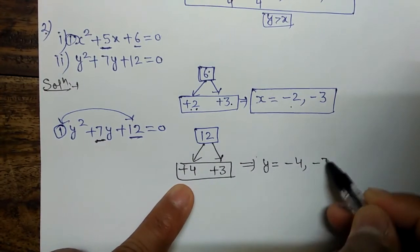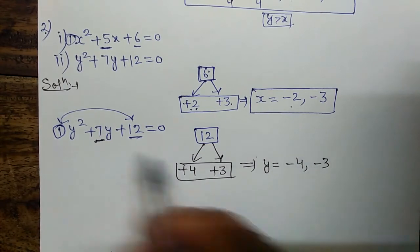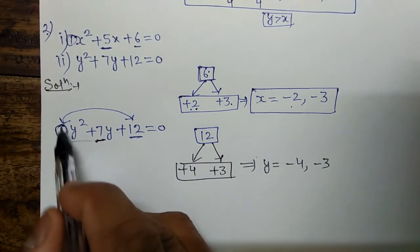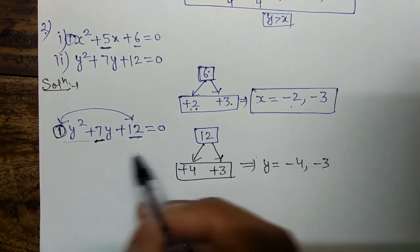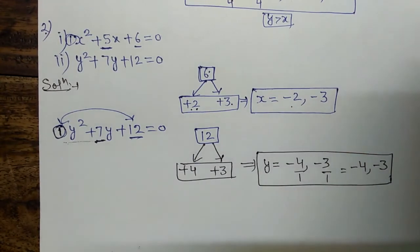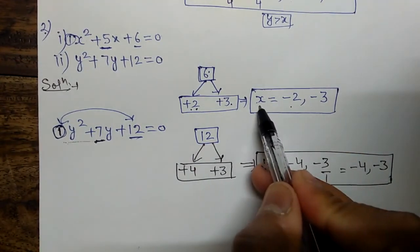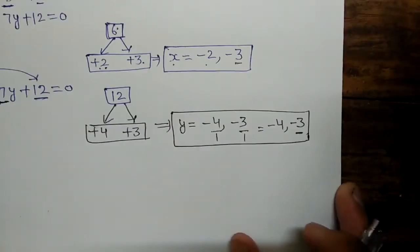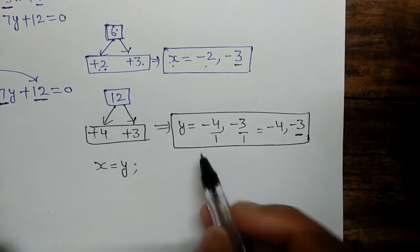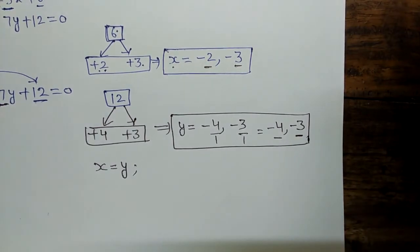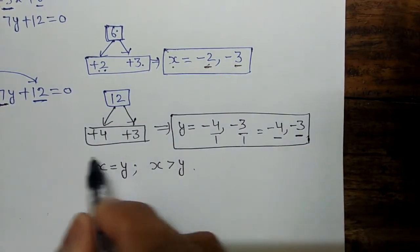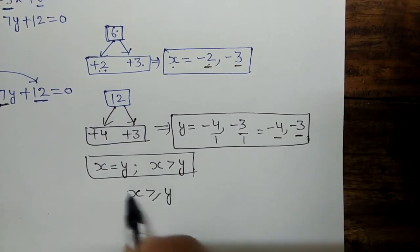So y = -4 and y = -3. Dividing by the coefficient of y², which is 1, the values remain -4 and -3. Now comparing: x = -3 and y = -3 in one case, so x = y. In another case, x = -2 and y = -4, so x is greater than y. Combining both cases, x ≥ y.